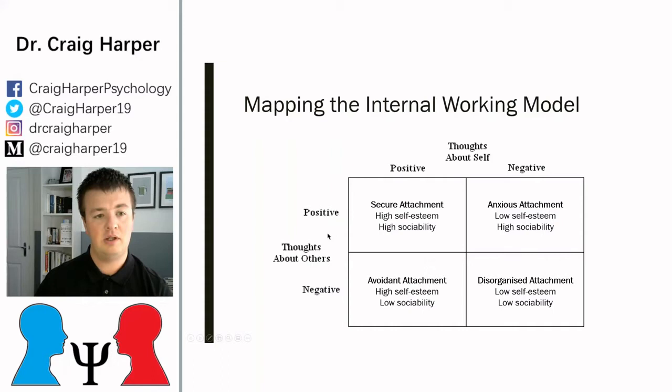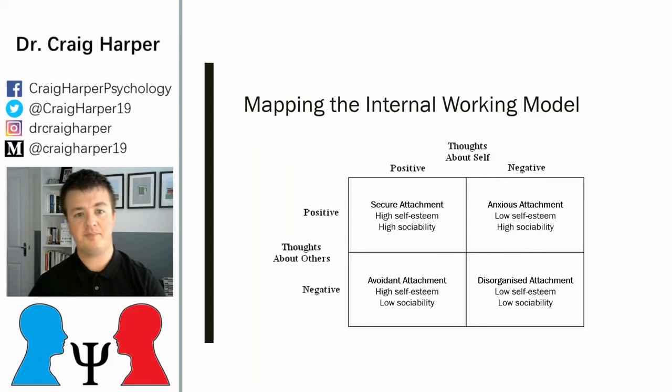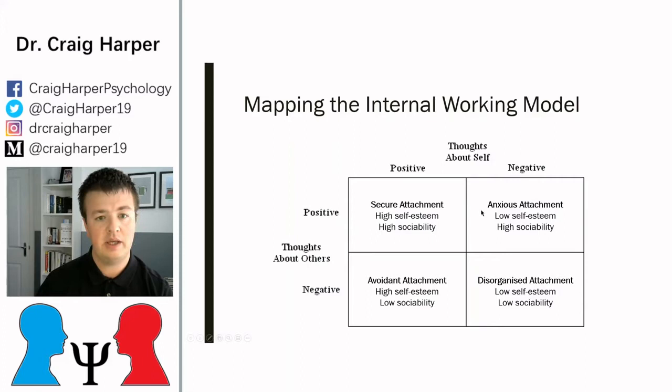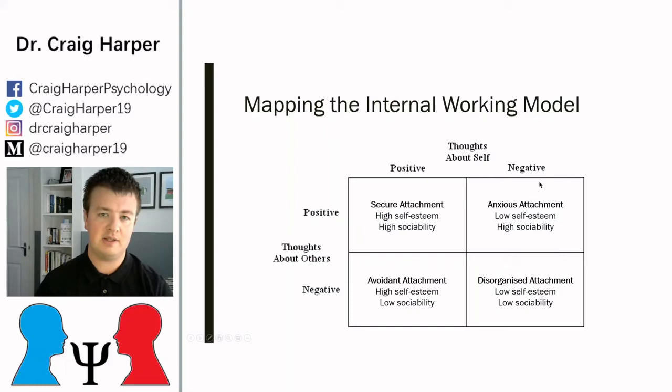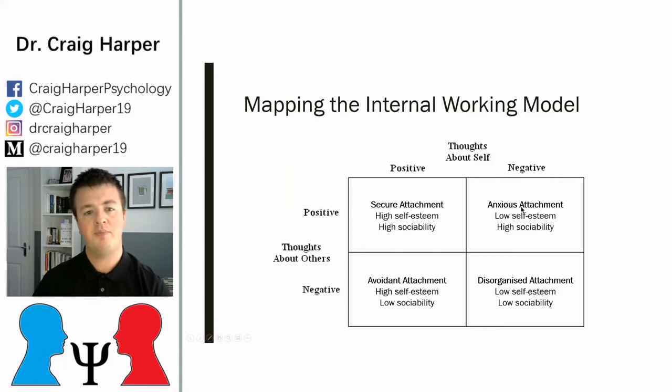Secure attachment manifests as high self-esteem coupled with high sociability and not being scared to reach out for support when needed. If someone is anxiously attached, their internal working model typically involves a very negative view of themselves — low self-esteem — which is why you see clingy, highly attached, anxious behavior. When coupled with a positive view of other people being there to look after you, this is where the anxious attachment behavioral pattern emerges: high sociability in seeking others for support, combined with low self-esteem.